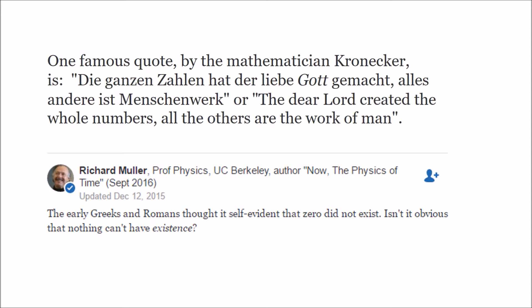There's a lot of agreement and disagreement here. We don't have a consensus about the existence of numbers because professors are still debating about this to this very day. The second quote is from Richard Muller, a professor of physics: the early Greeks and Romans thought it self-evident that zero did not exist. Zero we can think of as nothing — isn't it obvious that nothing can't have existence? Does zero exist if nothing can't have existence? That's a quote that really needs to reverberate around in your mind.